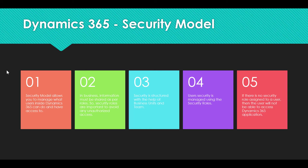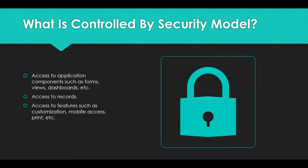This gives you an understanding of how the security model is available in Dynamics 365. Now let us see what is actually controlled by the security model. You can control access to application components such as forms, views, dashboards, etc. It also controls access to entities. You can also control access to records — for example, a user is allowed to see only their own records and not the records of their team members. You can also control access to features such as customization, mobile access, print, etc. There are many features available which we will discuss in upcoming videos.